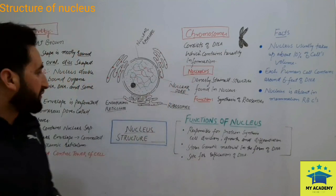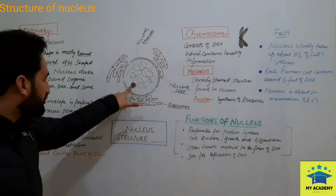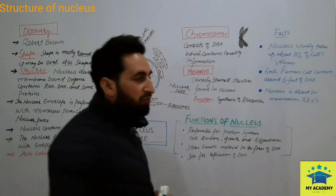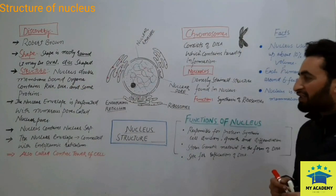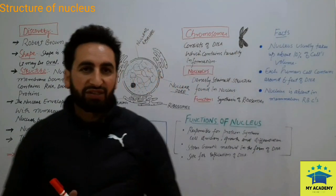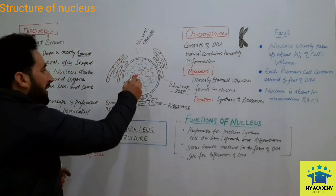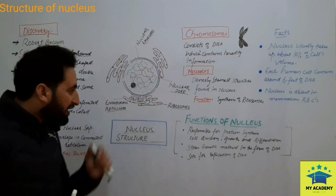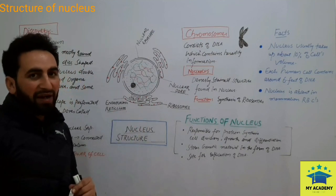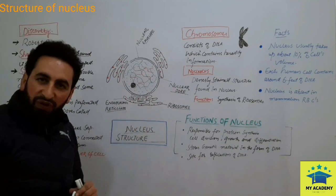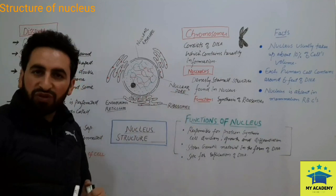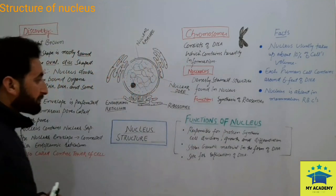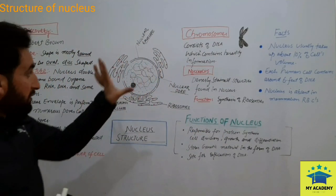Third, we have the nucleolus — this densely stained structure inside the nucleus. The nucleolus synthesizes ribosomes. Ribosomes take part in protein synthesis. The mRNA (messenger RNA) exits the nucleus and reaches the cytoplasm, where it combines with ribosomes and protein synthesis takes place at the ribosomes.